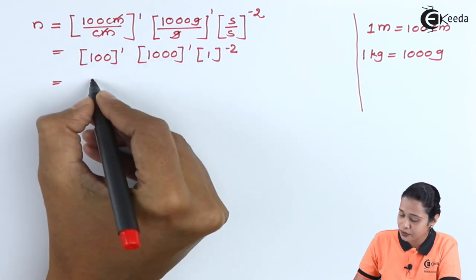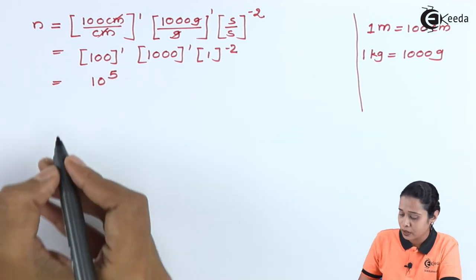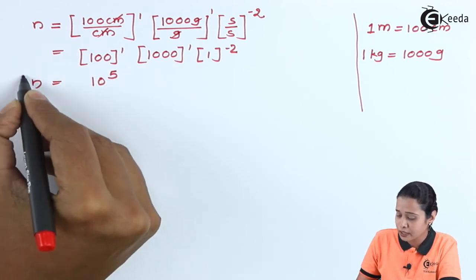So when we solve this, we will have 10 raise to 5. Means here the value of N is 10 raise to 5.